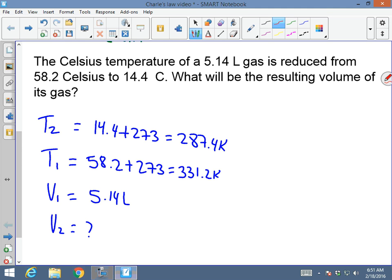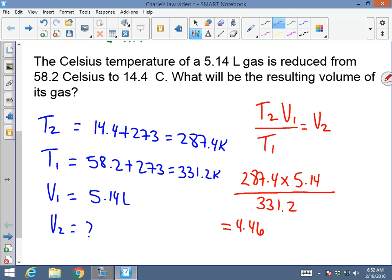Based on what I know from the equation, I could say that T2 times V1 divided by T1 equals V2. I multiply 287.4 times 5.14 divided by 331.2, and my answer will be 4.46 liters.